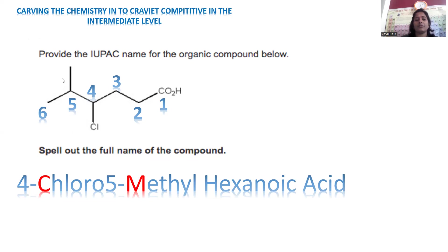To mention the substituents, we add them in alphabetical order. C comes before M, so chloro is indicated first before methyl. The final name of the compound is 4-chloro-5-methylhexanoic acid as the IUPAC name of the given organic compound. By this, question number one is completed.